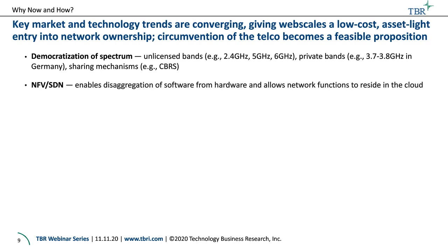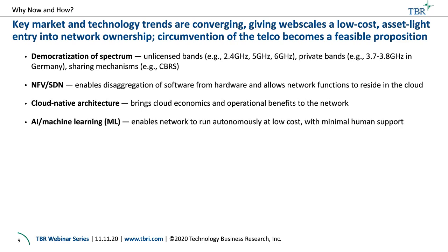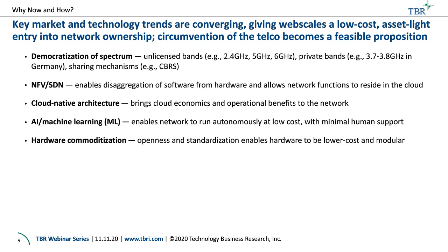NFV/SDN: disaggregation of software from hardware means you don't need proprietary network appliances anymore — all network functions will reside in the cloud. Cognitive architecture brings cloud economics and operational benefits into the network space. AI and machine learning enables the network to run autonomously at low cost with minimal human support. Hardware commoditization — web scales already do this in their central data centers using ODM boxes. This is coming into the network space, with white box network appliances like remote radio heads, optical equipment, and routers coming through programs like TIP and OCP.